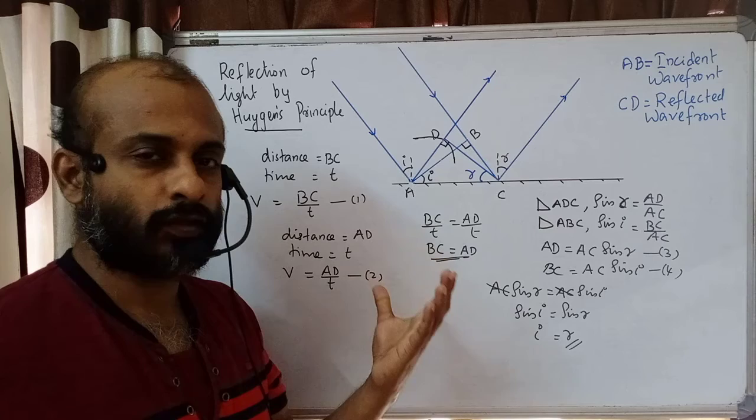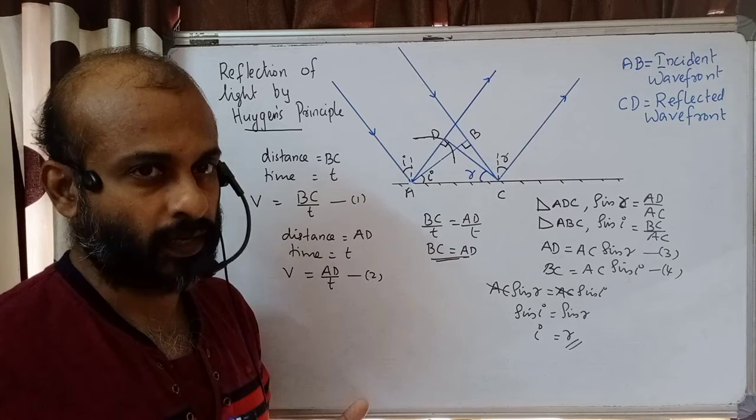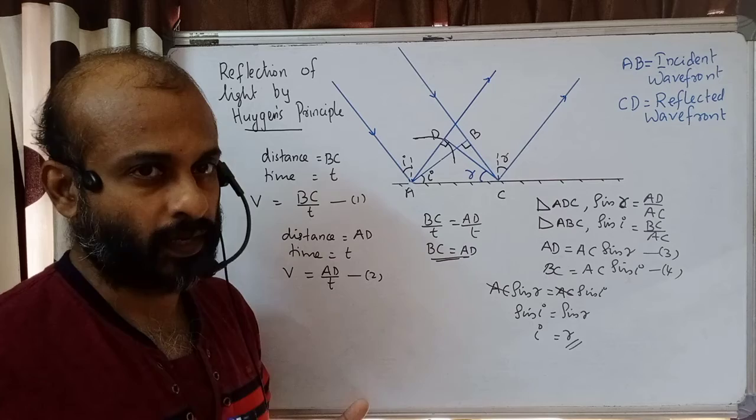One important point: during reflection of light there is no change in speed, because it is the same medium. The wavelength and frequency of light also remain unchanged when comparing the incident wave and the reflected wave. Thus we have proved the law of reflection of light.